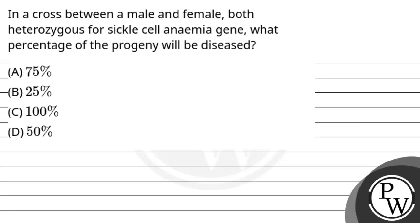Let's read the question. The question says: in a cross between a male and female, both heterozygous for sickle cell anemia gene, what percentage of the progeny will be diseased? The first option is 75%, second option is 25%, third option is 100%, and fourth option is 50%.